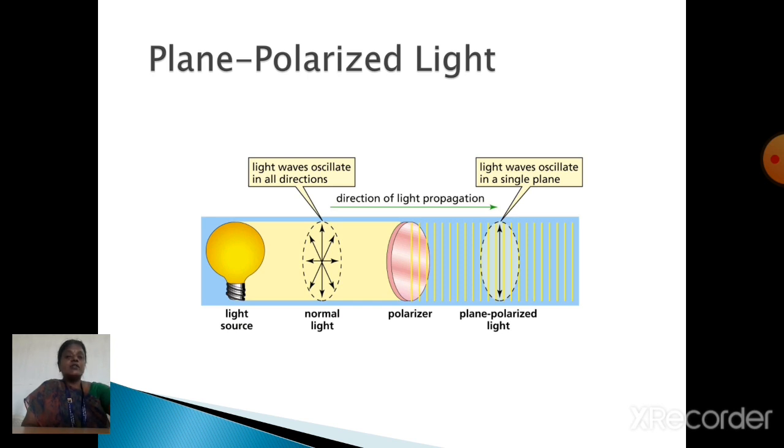We should convert the ordinary light into the plane polarized light by passing ordinary light through the Nicol prism. This prism converts ordinary light into plane polarized light. The plane polarized light can oscillate in a single direction.